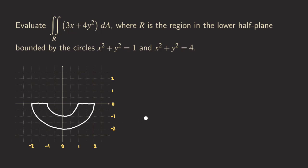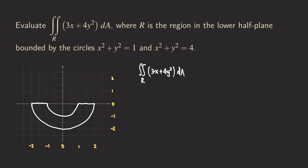Now the question is how to set up this integral. You can see that the region is circular, so instead of using rectangular coordinates — which would require three double integrals for this region — if we set it up in polar coordinates it will be a lot easier. So we are going to write this integral in polar. Let's first write down the integral: we have the double integral of 3x + 4y² dA.